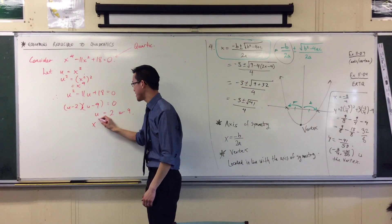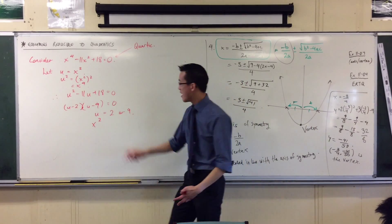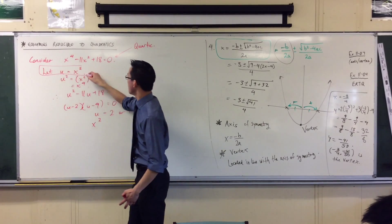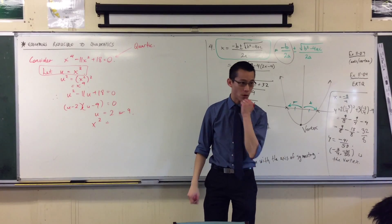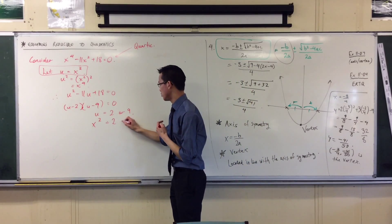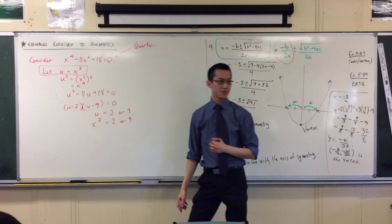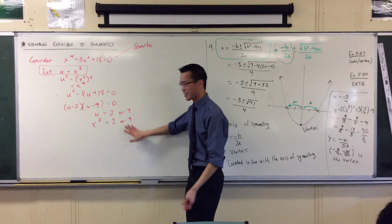Right at the beginning I said that u equals x squared. So down here I'm going to go back to x squared. I've got u equals negative two or negative nine here. And now if you just look at this one step at a time, suppose all you saw was x squared equals two, just like in your quadratics.